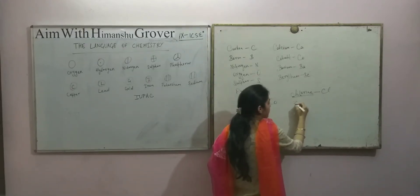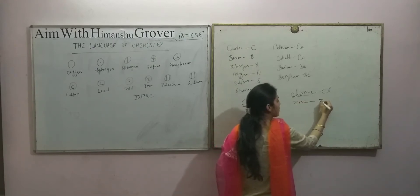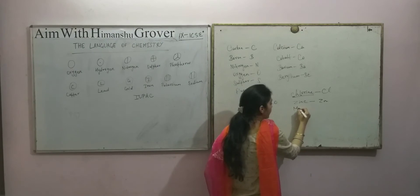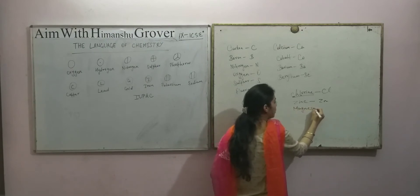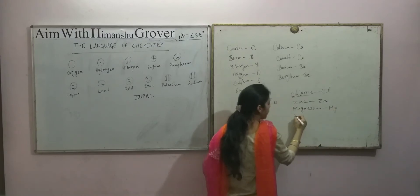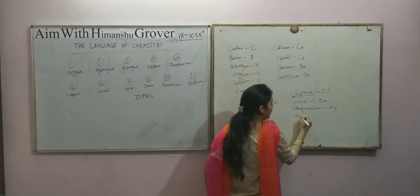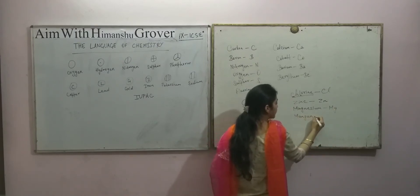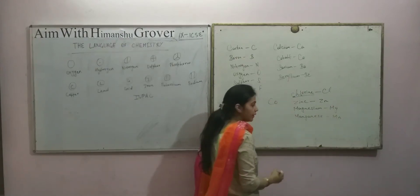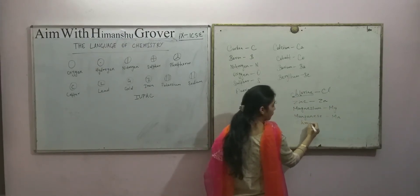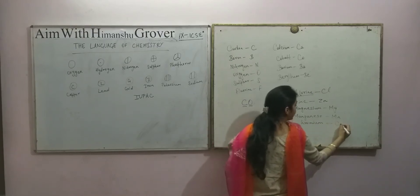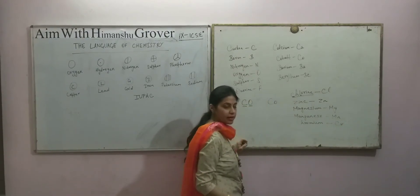More examples of sound-based symbols: zinc is represented by Zn. Magnesium is represented by Mg. Manganese is represented by Mn. Chromium is represented by Cr, and so on.